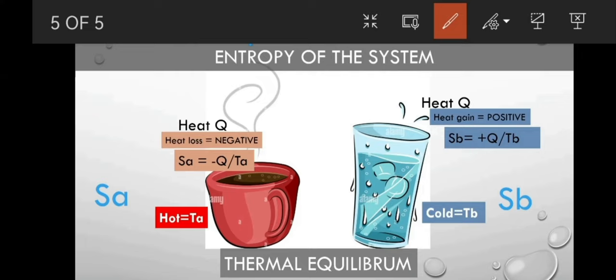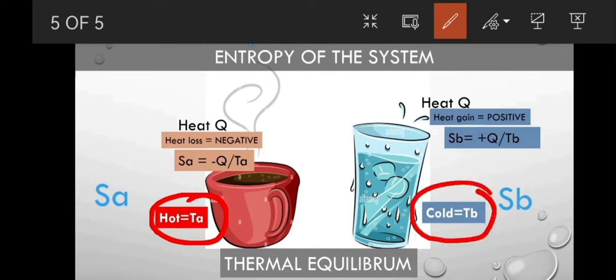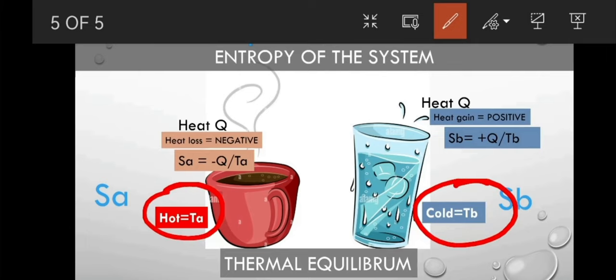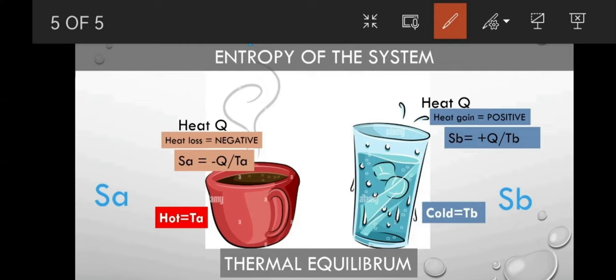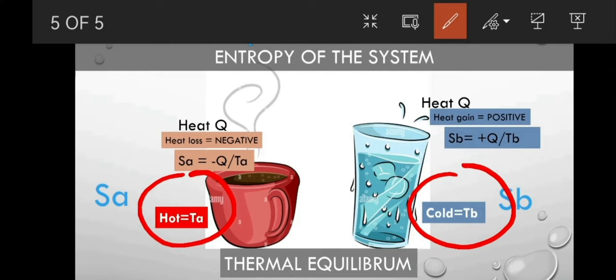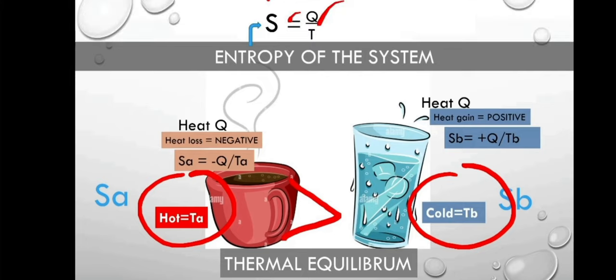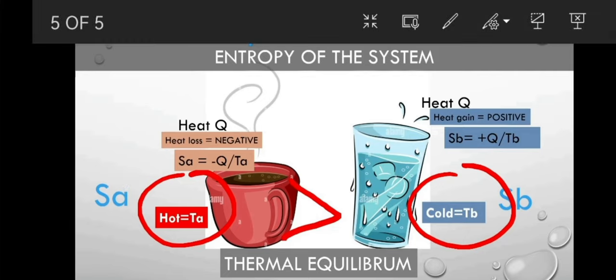We know that System A is hot, so let's denote its temperature as T_A. System B is cold, and let's denote its temperature as T_B. Hot temperature is always greater than cold temperature. So when solving a problem, we always select the greater temperature and consider it as hot.